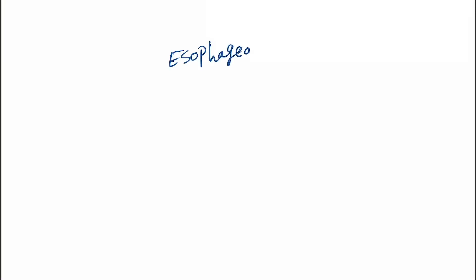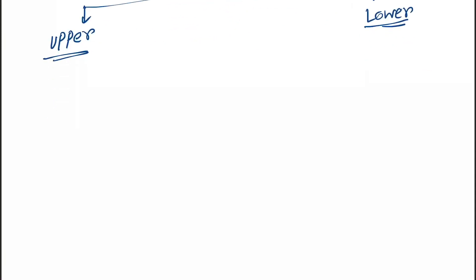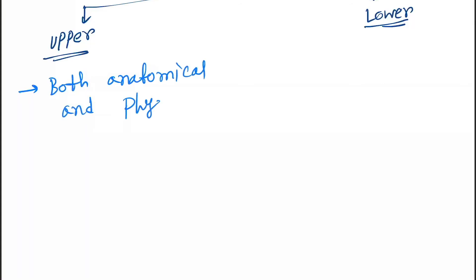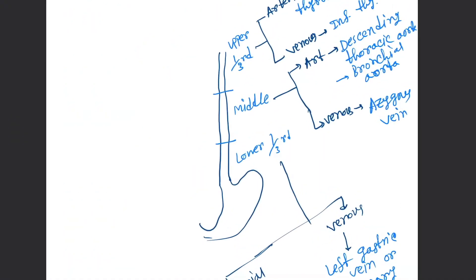There are two esophageal sphincters: the upper esophageal sphincter and the lower esophageal sphincter. The upper esophageal sphincter is both an anatomical and physiological entity — it is an area of high pressure and narrowing. The lower esophageal sphincter is only a physiological entity.